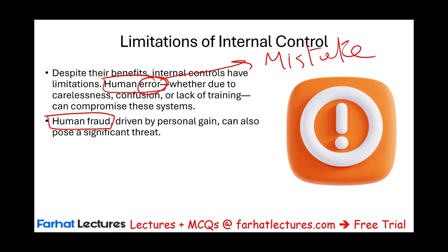Fraud is totally different. When we talk about fraud, we're talking about committing a crime, driven usually by personal gain — whether for oneself or for the company. Human fraud can defeat internal control and is usually committed by upper management, because management has more access to controls within the company. Human fraud is extremely dangerous — it defeats the internal control.